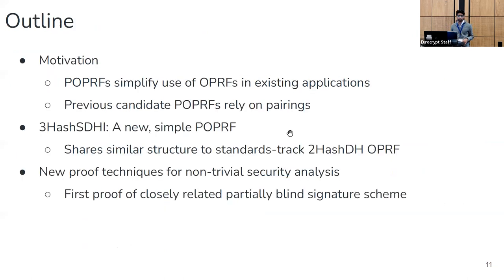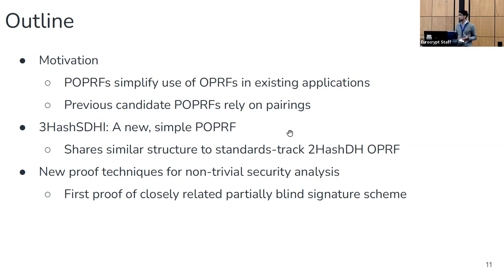What we've observed is that in all of these OPRF applications, a POPRF can be slotted in in place of an OPRF, and this extra power of the public tag can be used to simplify the application. When we looked at prior existing POPRF constructions, we found that either these constructions relied on pairings or didn't provide verifiability, which posed a barrier to adoption. Our main contribution then is constructing a new verifiable POPRF that's as efficient as 2-hash-DH, so it can be easily used as a drop-in replacement.